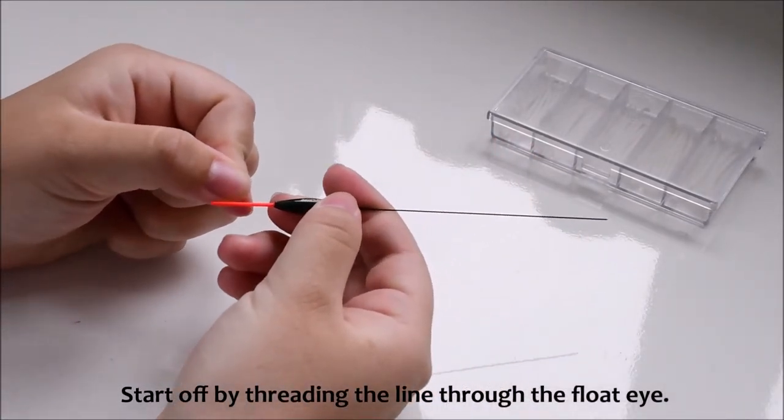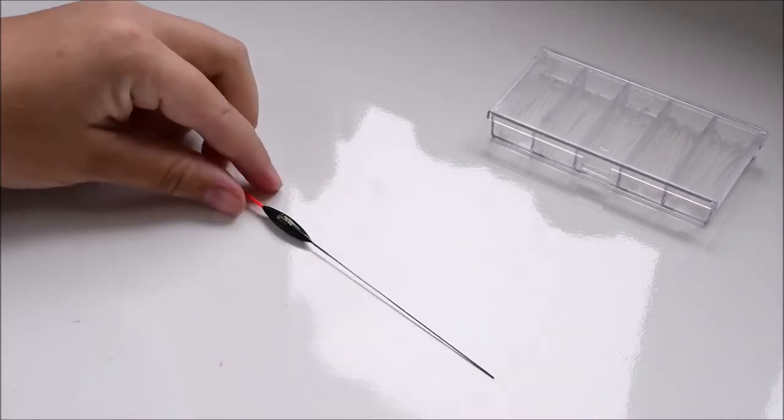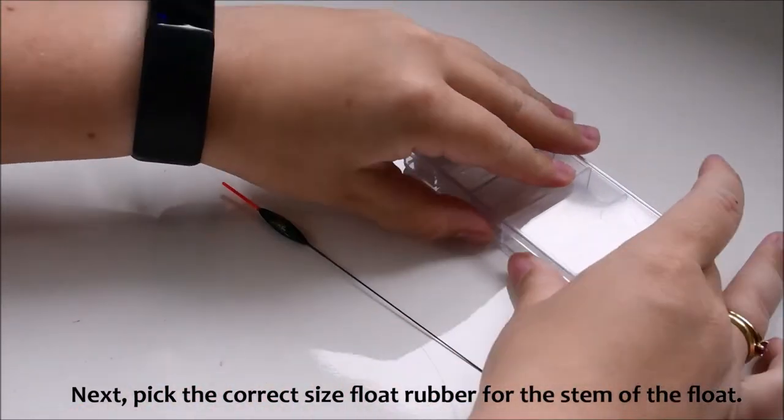Start off by fitting a line through the float eye. Next, pick the correct size float rubber for the stem of the float.